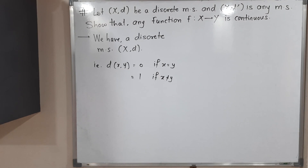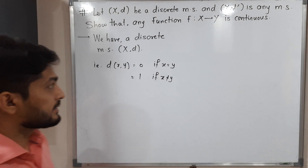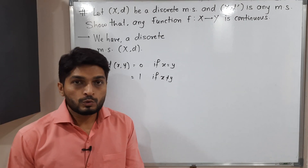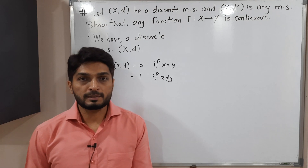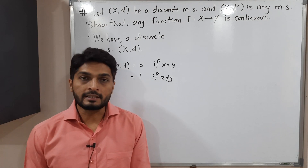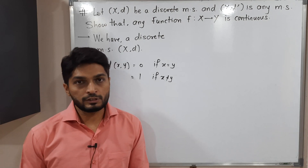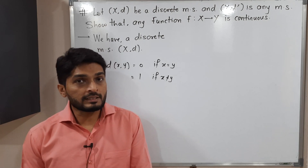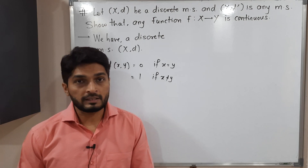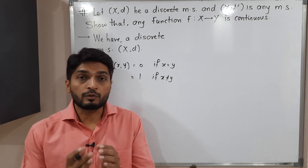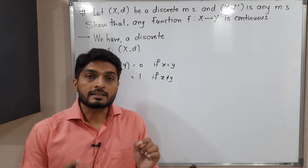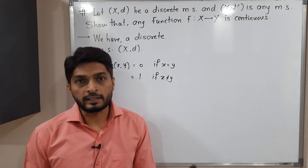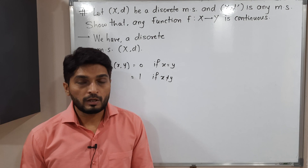Hi everyone. In this video we are going to discuss this result. The result says if you have two metric spaces X,d and Y,d', where X,d is a discrete metric space, then any function f from X to Y is definitely a continuous function.